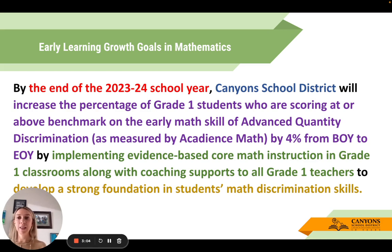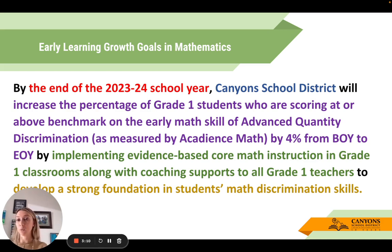Kindergarten teachers — what that means for you is that you have the beginning quantity discrimination, which has a similar predictability as well. That's kind of where these things come from.